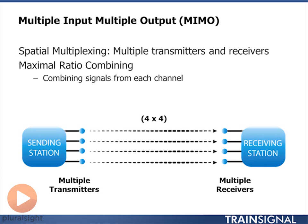Four transmit antennas and four receive antennas. If I transmit from four antennas at the same time on the same frequency, those signals will combine over the air. What arrives at antenna 1 on the receiving side is a combination of the four signals transmitted, and what arrives on antenna 2 is a summation of all four transmitted signals.